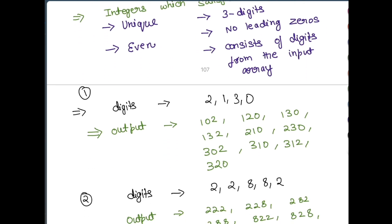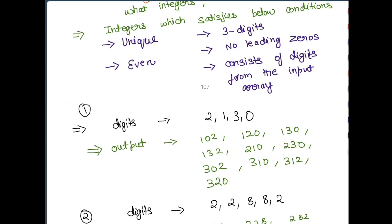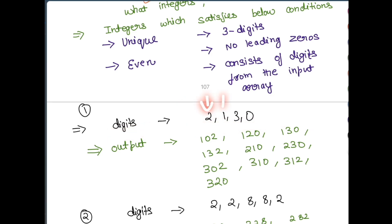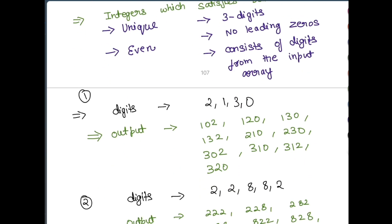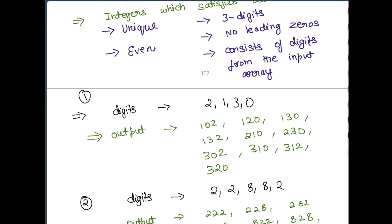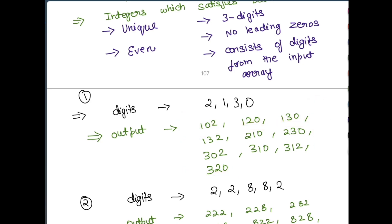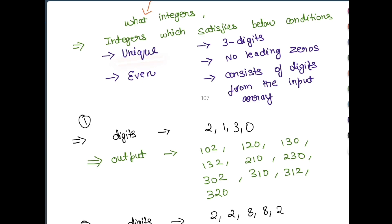Let's understand this with example one. The given input digits are [2, 1, 3, 0]. The output is 102, 120, 130, 132, 210, 230, 302, 310, 312, and 320. You can see that the array is sorted — from 102 to 320 — and all the three-digit numbers in the output are unique, none of them repeating.